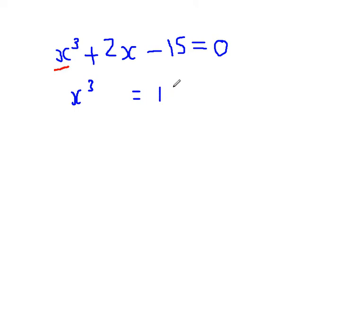We get x³ = 15 - 2x. Now, this is odd because we've got x on both sides, but I'm only interested in making this x the subject.